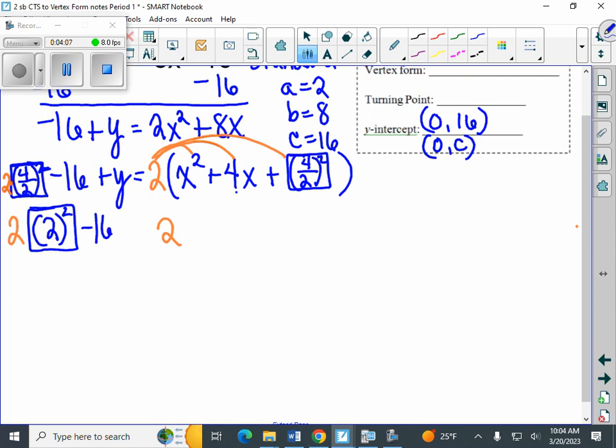Minus 16, plus y. And over here, we have x squared, plus 4x. And we've simplified this box to be 2 squared.